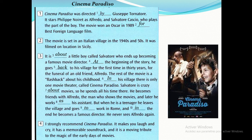The film review has four paragraphs. Let's start reading: 'Cinema Paradiso was directed by Giuseppe Tornatore. It stars Philippe Noiret as Alfredo and Salvatore Cascio who plays the part of the boy. The movie won an Oscar in 1989 for Best Foreign Language Film.'